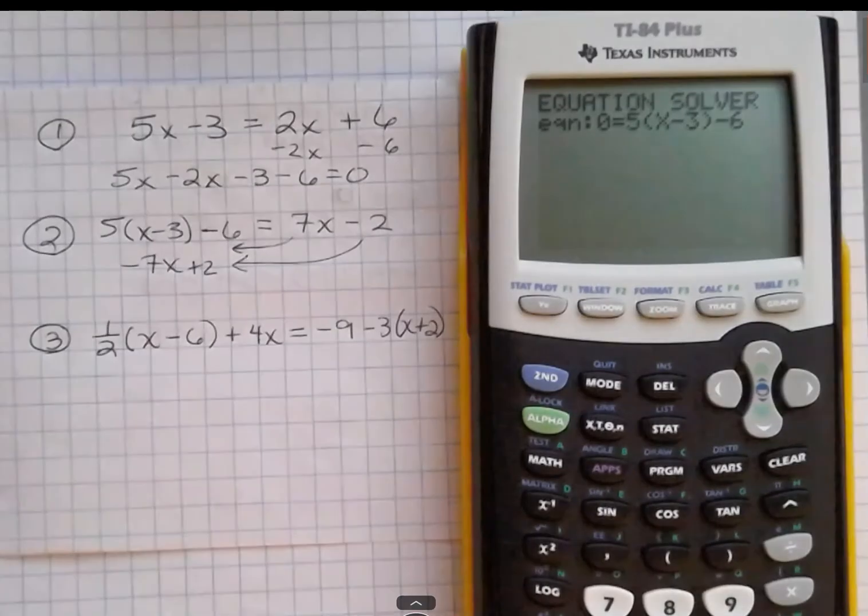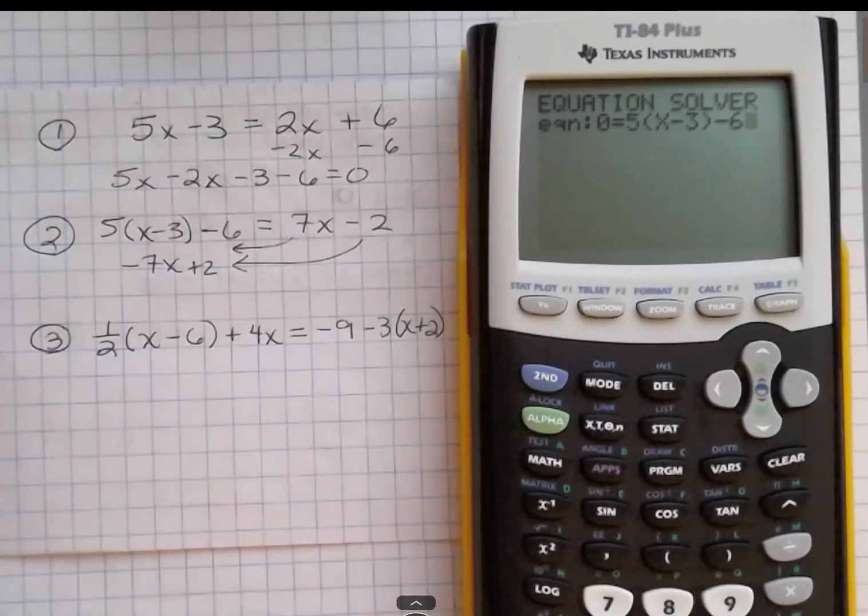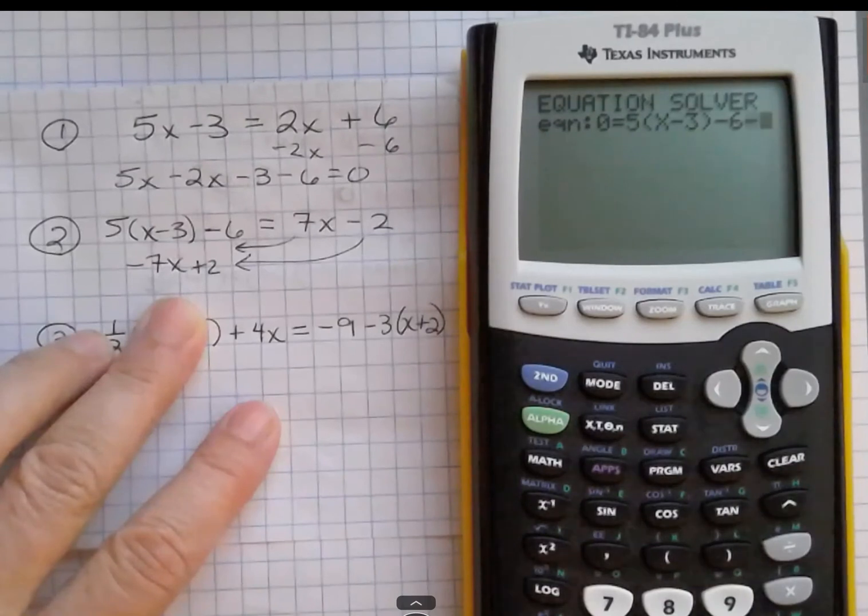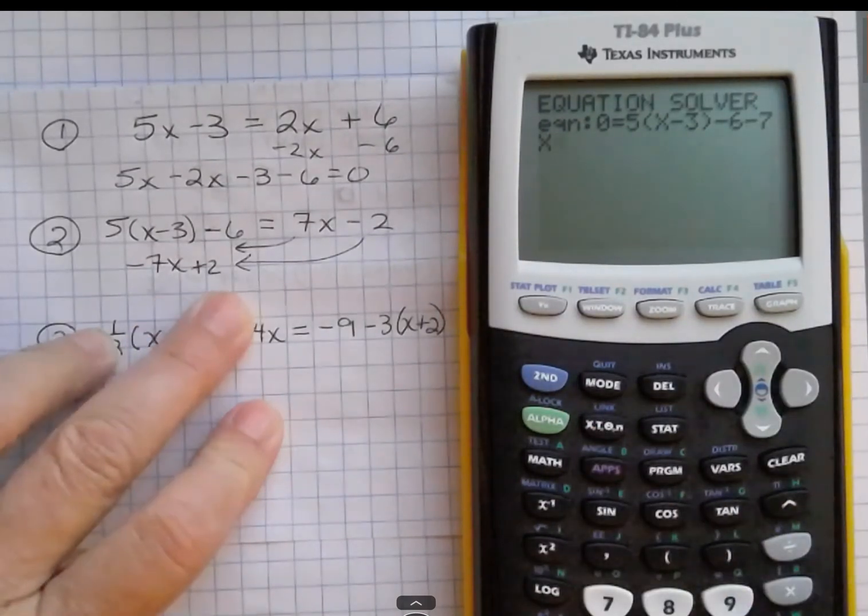So we always have to move everything over to the other side. We don't have to have it in the same order. It doesn't matter as long as it's over there and it has the correct sign in front of it. So minus 7x plus 2.